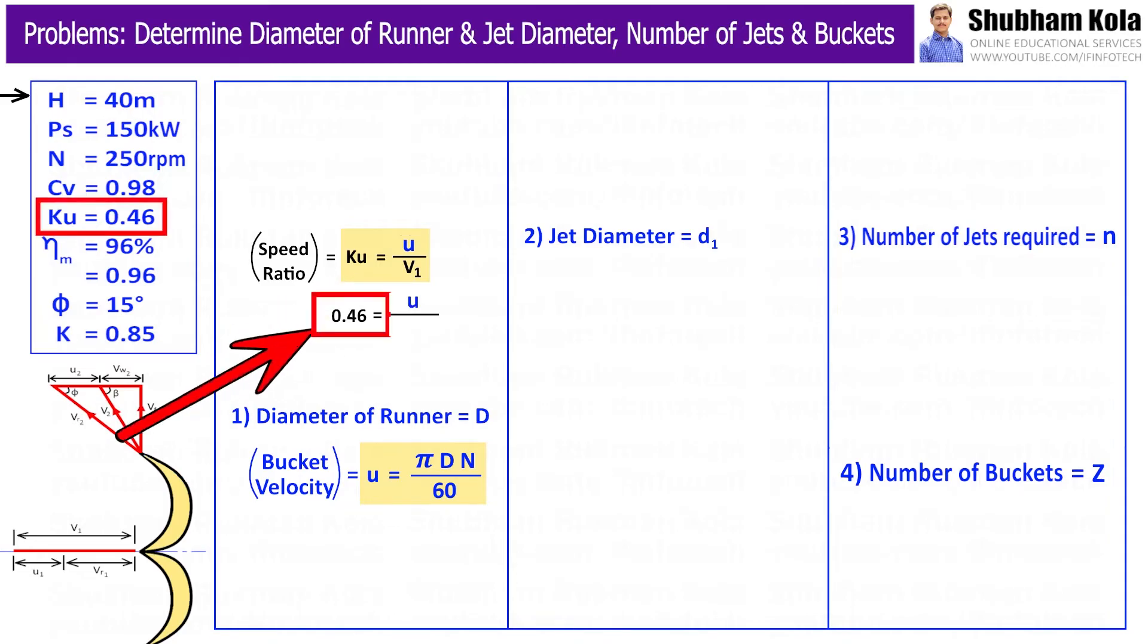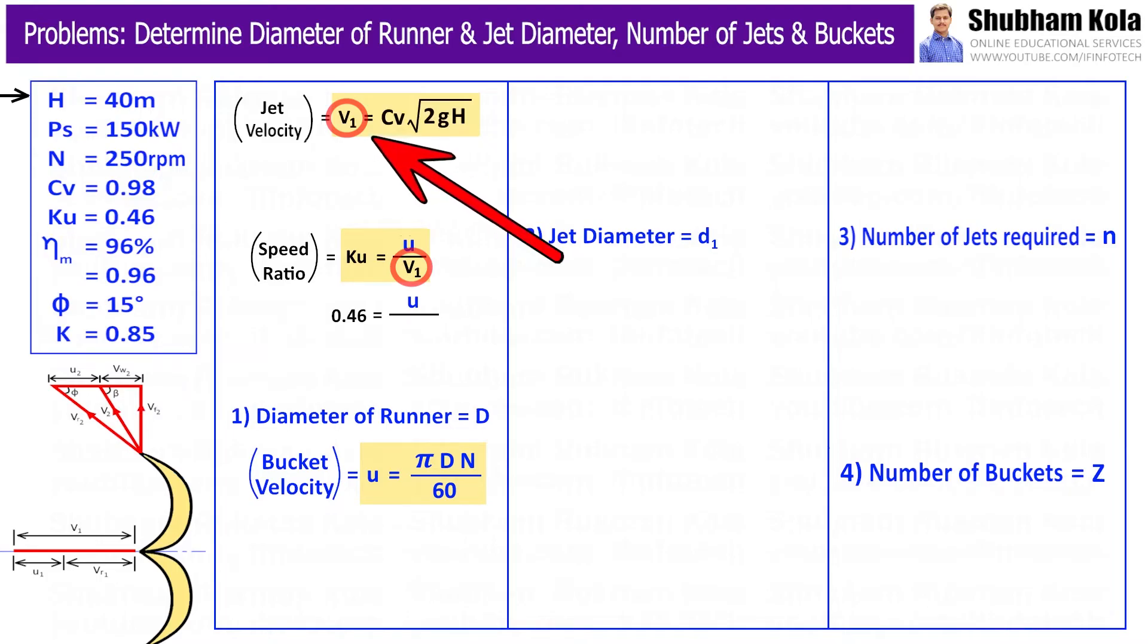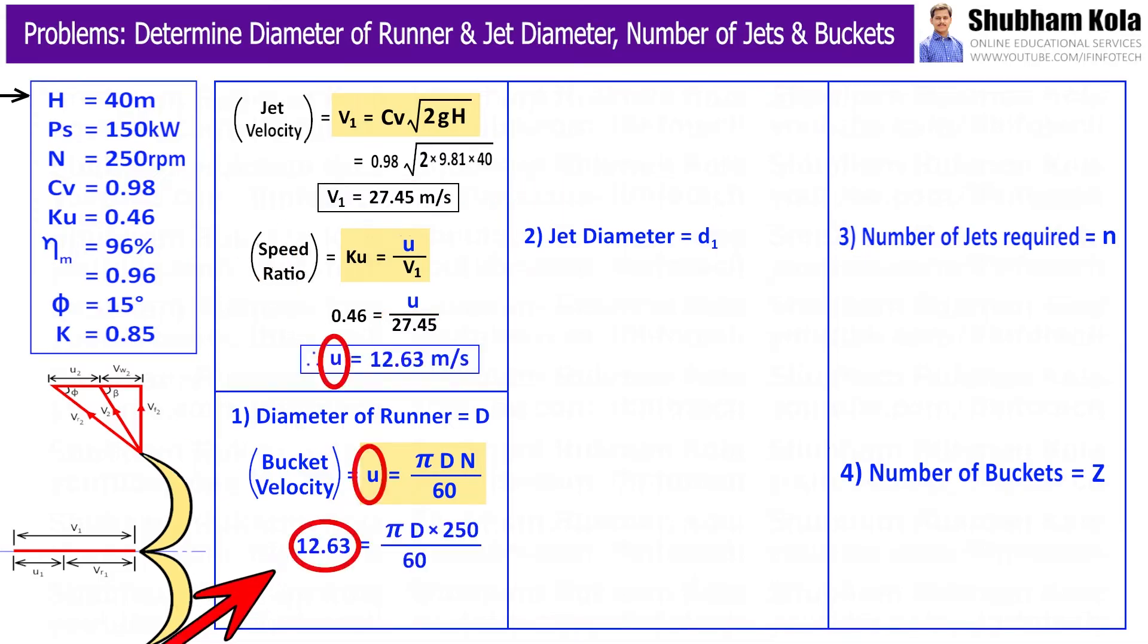To calculate u, we have speed ratio Ku = u/V1 = 0.46, and velocity of jet V1 is given by formula CV√(2gH) where H is 40 meter, velocity coefficient CV is 0.98, and g is 9.81. By calculating, this gives the value of velocity of jet V1 as 27.45 m/s. Substituting bucket speed u and speed N equal to 250 rpm, this gives the value of diameter of runner D as 0.965 meter.